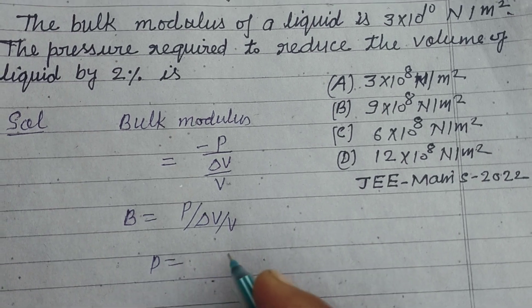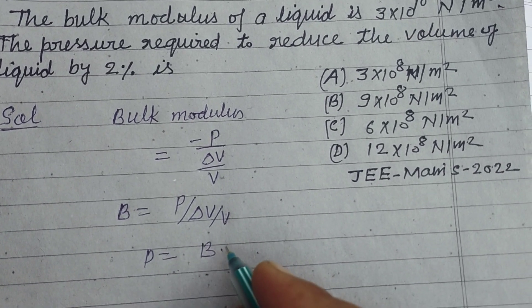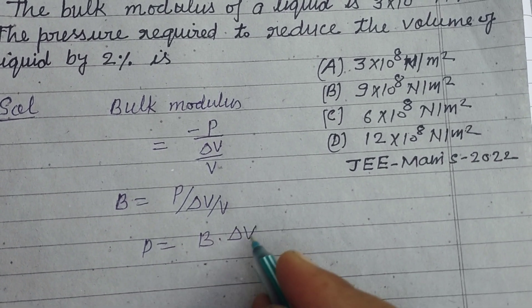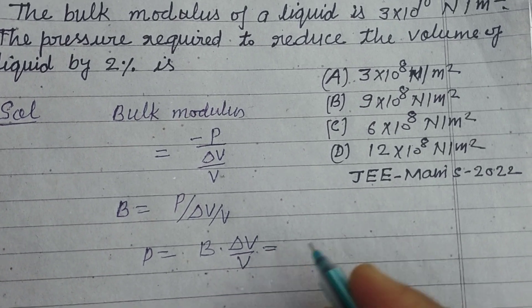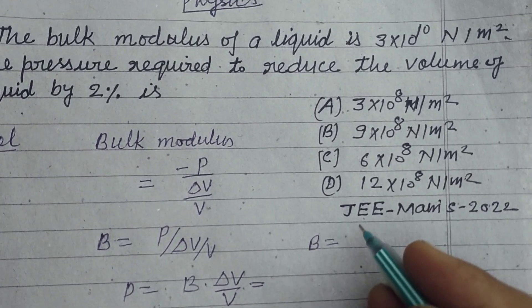We can write this as P = B × (ΔV/V). Here, bulk modulus is given to us as 3×10¹⁰ N/m².